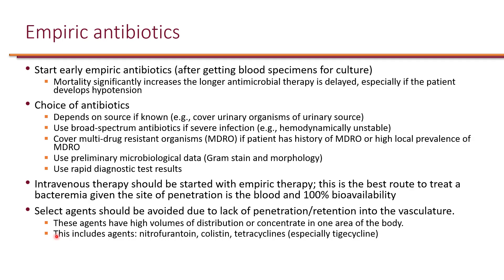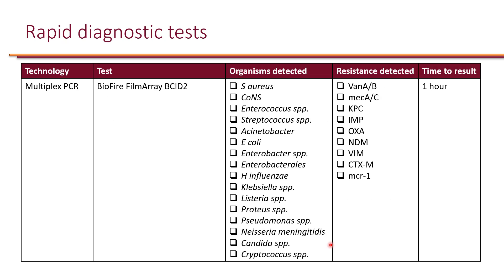Some antibiotics do not achieve sufficient concentration in the blood and should be avoided, regardless of whether oral or IV. Nitrofurantoin goes straight into the urine and does not achieve enough blood concentration. Colistin, an IV antibiotic, also goes straight into the urine. Tetracyclines — especially tigecycline — have a very large volume of distribution, achieving high concentrations in tissue but very little remaining in the blood. Tigecycline has a black box warning for increased risk of mortality as a result.